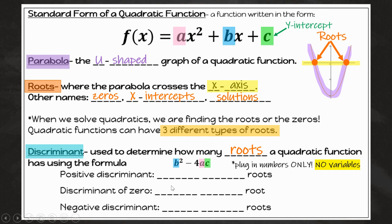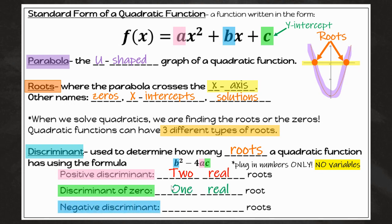For a positive discriminant, if we plug in all the numbers and we end up with a positive number, then we get two real roots. When we plug in all of the numbers for a, b, and c, and we get zero, then we have one real root. And if we plug in all those numbers and we get a negative number, a negative discriminant, then we have no real roots. On this next slide, you're going to see how those relate, and I'll show you how to plug it in using the formula.